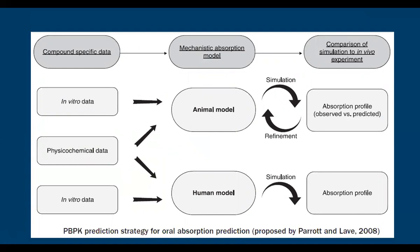Coming to the pharmacokinetic model — PBPK prediction strategy for oral absorption prediction, done in 2008 — compound-specific data feeds into a mechanistic absorption model, then comparison of in vivo model is made. In vitro data, physicochemical data, and in vivo data relevant to the compound can give in vitro physical data for the animal model and for the human model. During simulation and refinement, animal data provides observed versus predicted values, and the simulation of the absorption model with comparative data is identified from in vitro, animal, and human models to finally predict drug behavior during absorption.